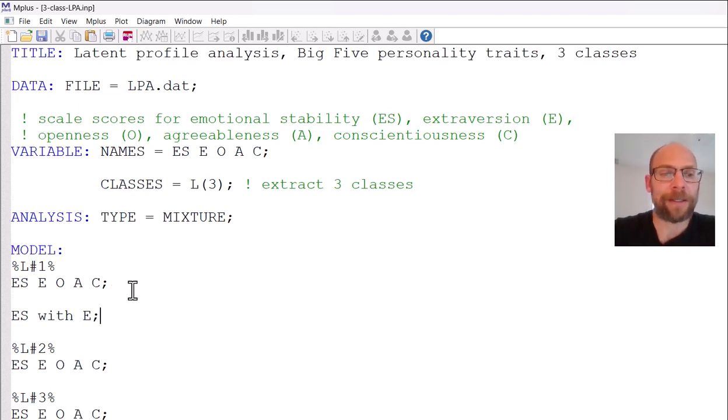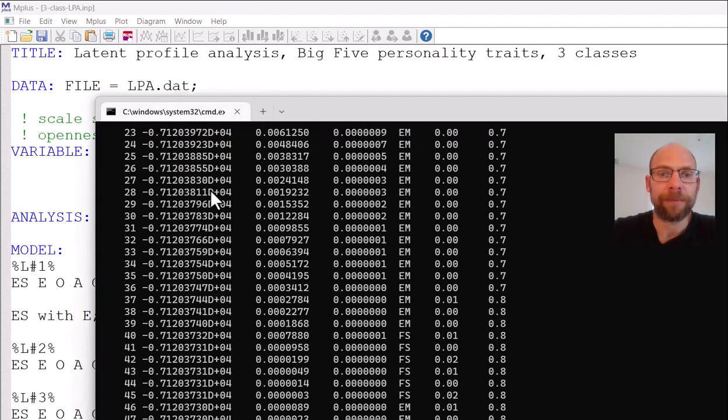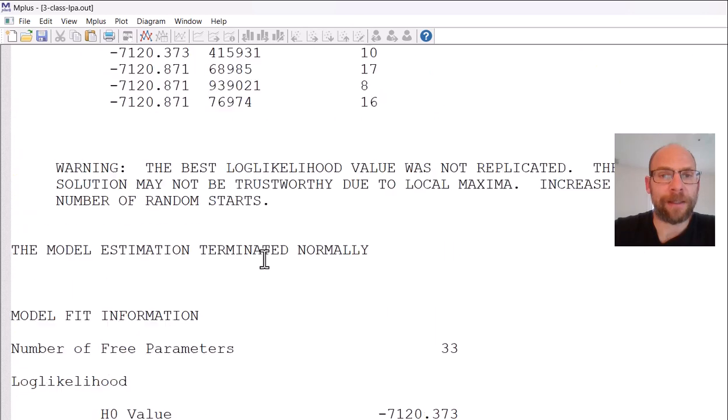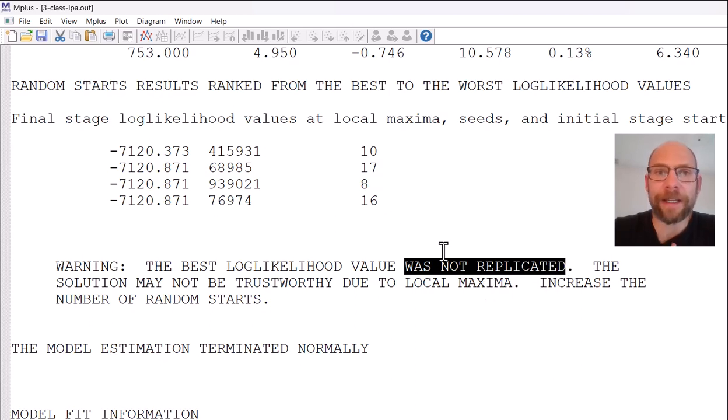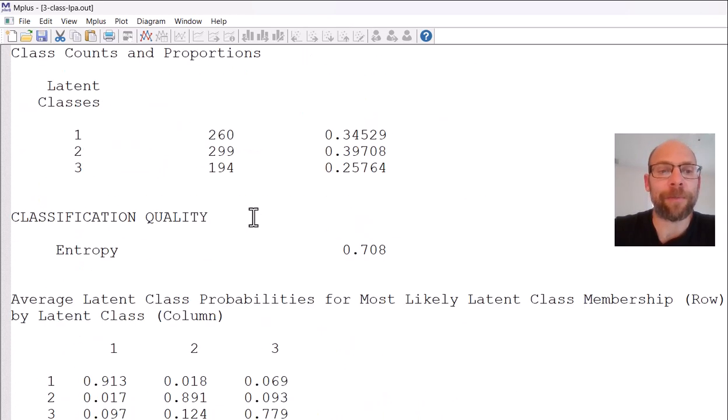Let's take a look at this and see if this model will run with these additional freed up parameters. We would have to check the solution because the best log likelihood value here was not replicated. There weren't enough starting values used by default. This log likelihood value here at the top is slightly different than the next best one, so we should definitely examine that. I have a separate video on how to increase the number of starts to avoid local maxima in latent class and latent profile analysis here on that channel that you can check out. But for now let's just assume that this is a valid solution.